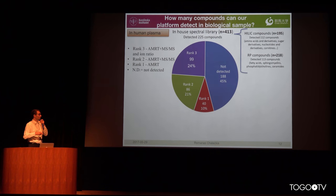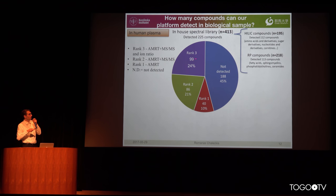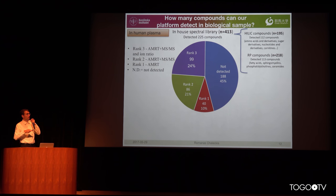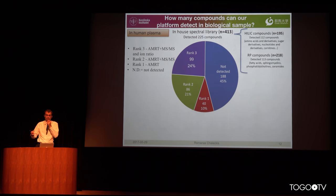Breaking this down by identification rank: less than half in the library are undetected. We have a significant portion of rank 2 compounds confirmed by retention time and mass fragments, and rank 3 compounds of which we are quite sure about the identity. Please note the number — it is 100 compounds.